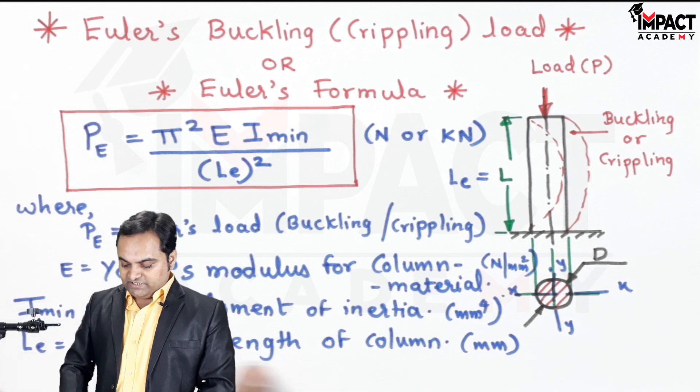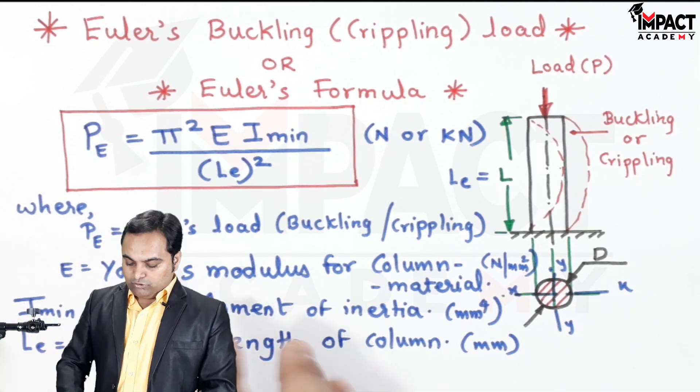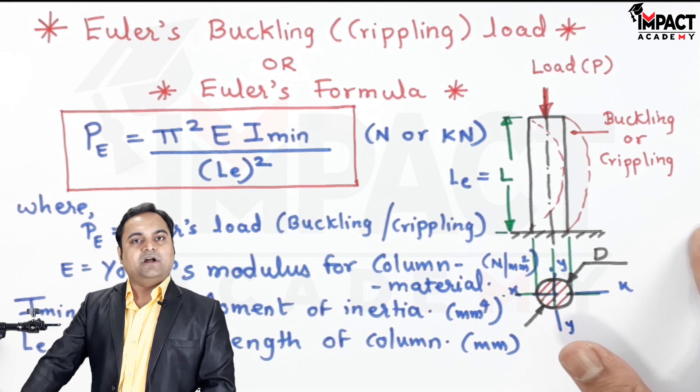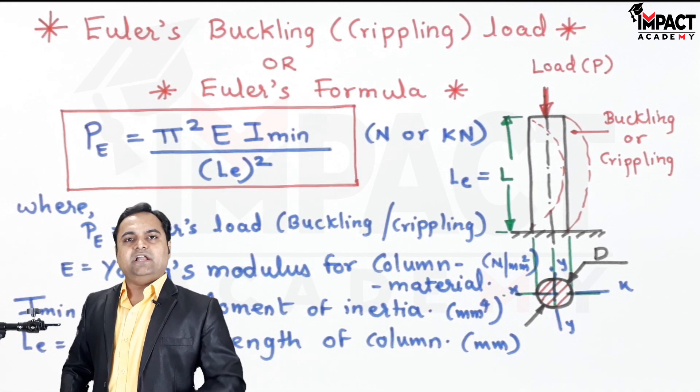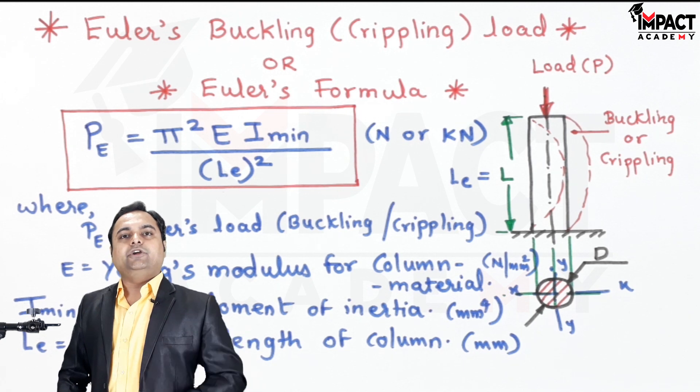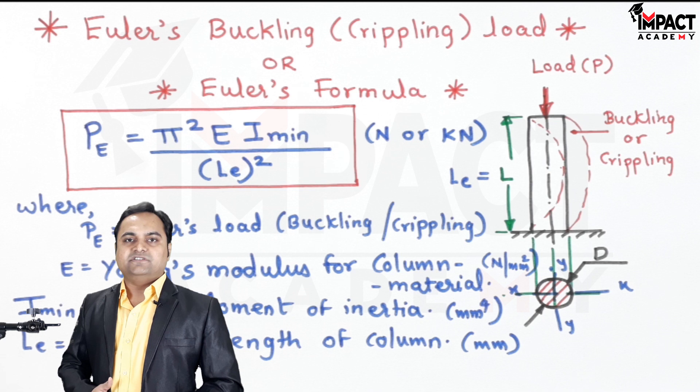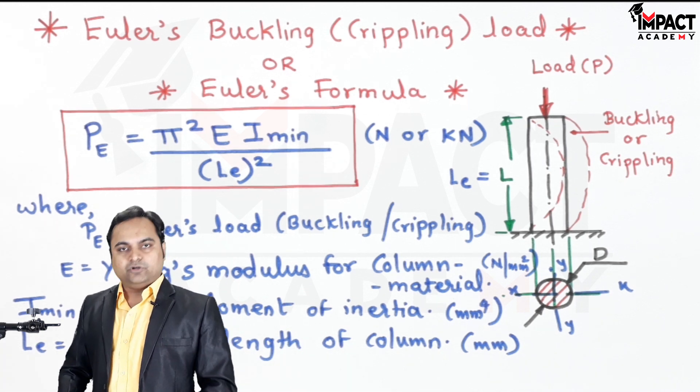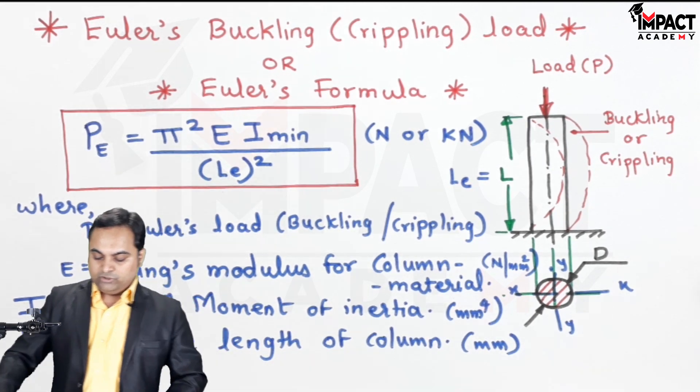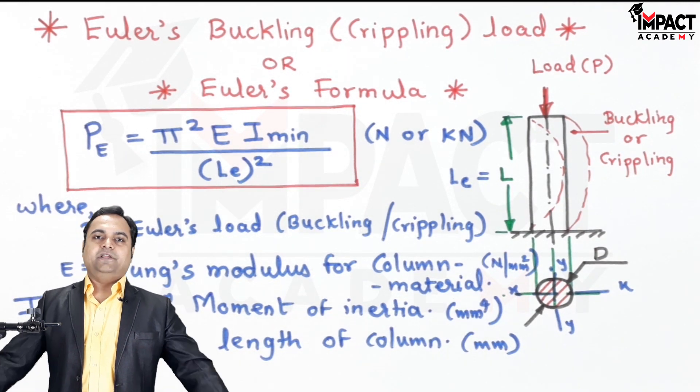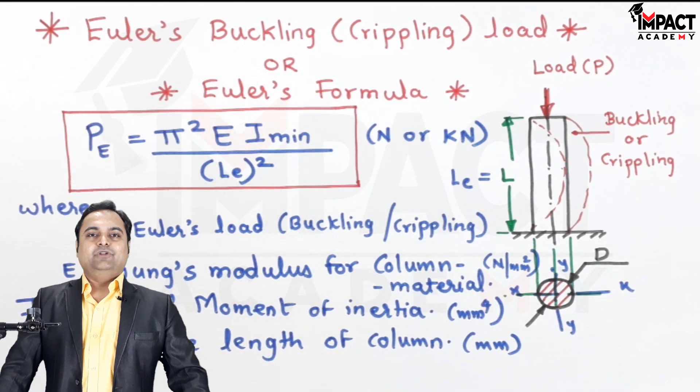By using this formula, that is Euler's formula, we can find the Euler's crippling or buckling load. Once we know the value of this load, we can avoid this load falling onto the column by dividing it with a factor of safety, and that would give us the safe load which should be kept over the column. Euler's buckling load should not be kept on the column because that would result in buckling or crippling. So that was regarding the Euler's formula.